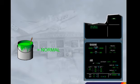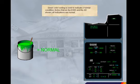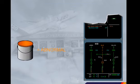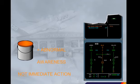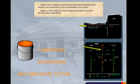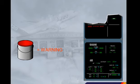Notice that on the engine warning display and the system display shown, all indications are normal. Amber colour coding is reserved for abnormal indications that require crew awareness, but not immediate crew action.